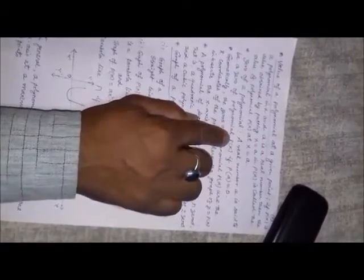Next point is 0 of a polynomial. A real number a is said to be a 0 of polynomial px if p of a is equal to 0. By putting x is equal to a in the given polynomial, the value of polynomial becomes 0.